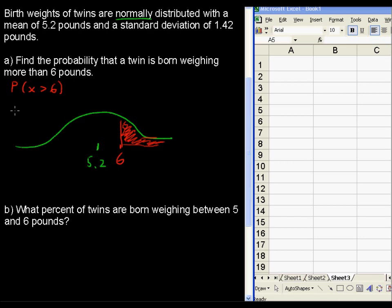First of all, the function for Excel is equals normdist, and then you type in the x value, which is going to be 6 in our example here, the mean, the standard deviation, and then it asks whether or not it's cumulative.